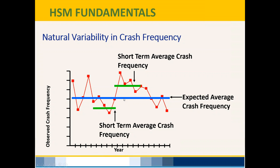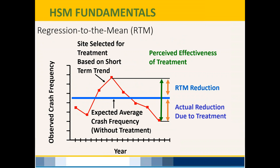You don't want safety improvements to be overstated. If you look at year X and year Y and think you've made a big improvement, when you account for regression to the mean the improvement may be much smaller — which is actually a good thing, because it tells us the truth. When you use the highway safety manual, you're accounting for regression to the mean and getting a more accurate average.